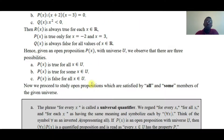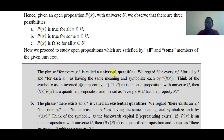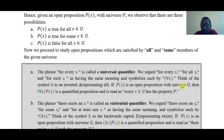Now, the universal quantifier: 'for all x' or 'for every x' is called the universal quantifier. The symbol is an inverted A, representing 'for all.' The phrases 'for every x,' 'for all x,' and 'for each x' have the same meaning and are symbolized by ∀x. If p(x) is an open proposition with universe U, then 'for all x, p(x)' is a quantified proposition, meaning every x element of U has the property p.